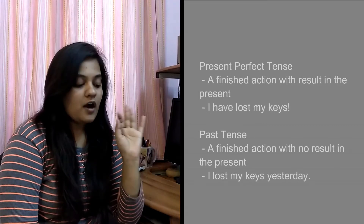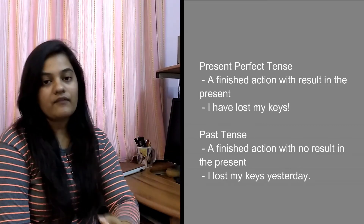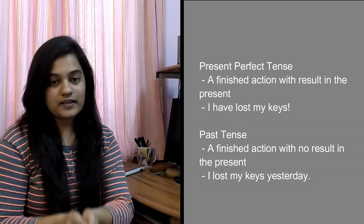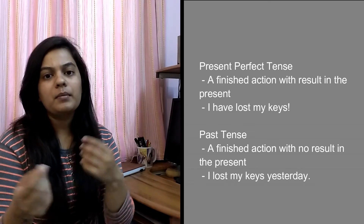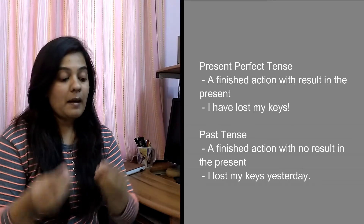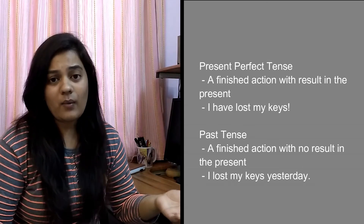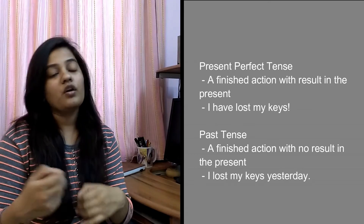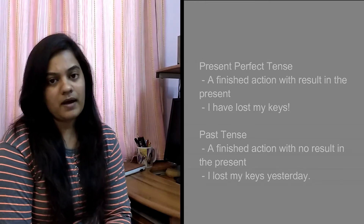Number 3: a finished action with a result in the present. When you have a result in front of you, you use present perfect tense. For example, I have lost my keys — but somehow I found them and I am able to go inside my house. When do we use simple past tense? I lost my keys — meaning now I don't have my keys and I will have to get a new one. Number 4: present perfect tense has unfinished time, but simple past tense has finished time.